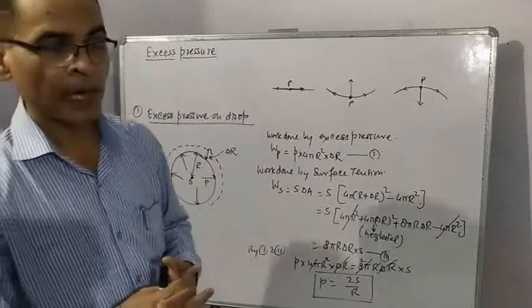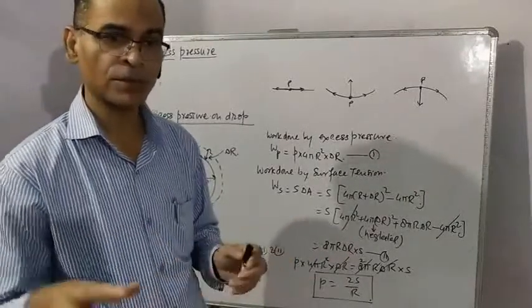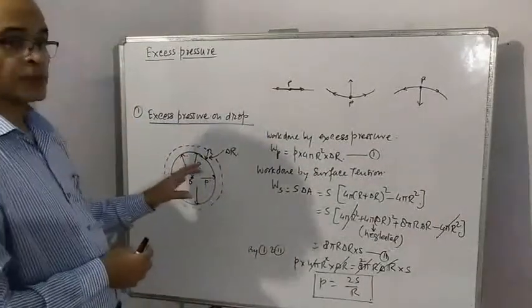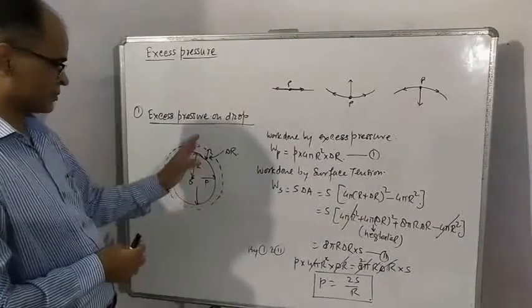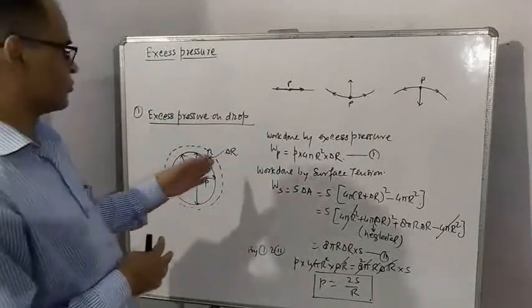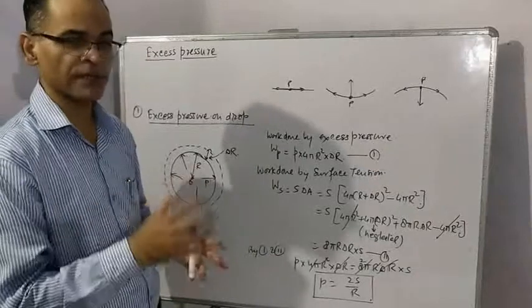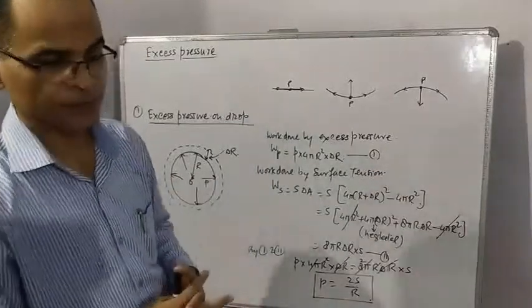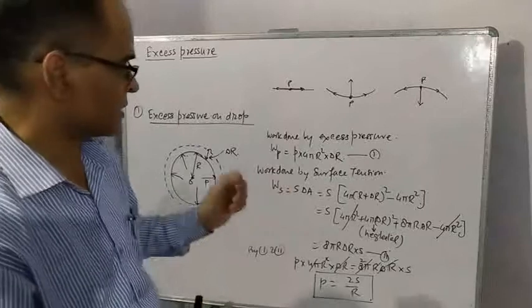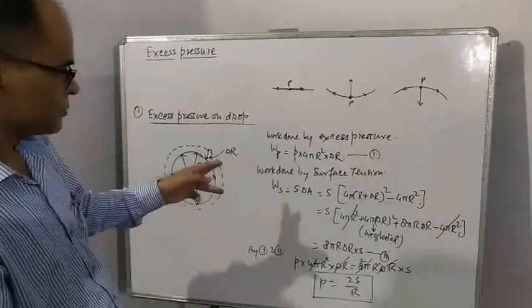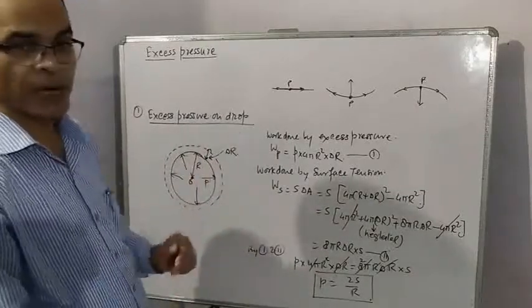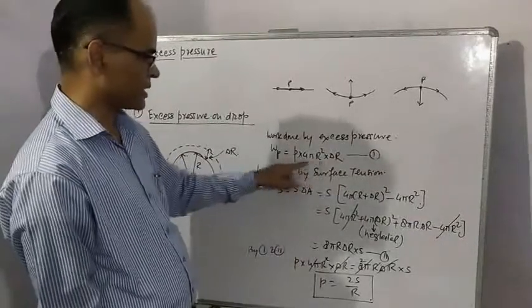Surface tension has the opposite tendency—to keep the surface area minimum. So the nature of work are opposite. In equilibrium condition both work are equated to find excess pressure. Let excess pressure be P. Surface area of sphere is 4πr², so P into 4πr² is the force acting. Because of this excess pressure, change in radius is ΔR, so work done by excess pressure is force into displacement.